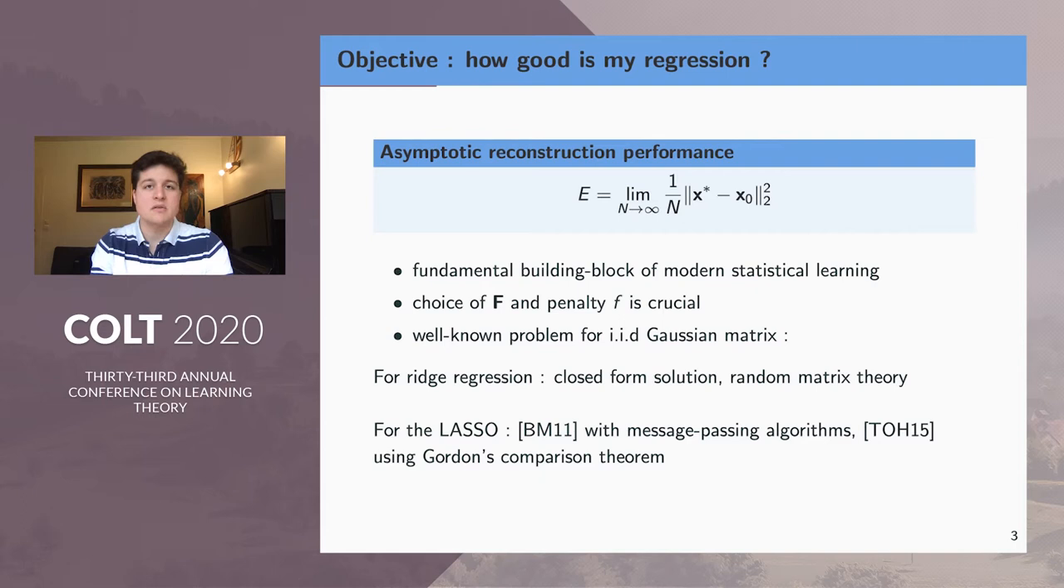For this analysis, the choice of the matrix F and the penalty little f is crucial. This is a well-known problem for IID Gaussian matrices and for the ridge regression, there is a very simple closed form solution and well-established random matrix theory results can give straightforward analytical solutions for this asymptotic reconstruction performance.